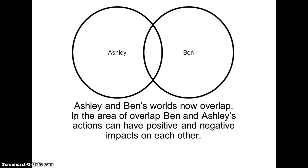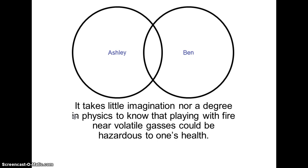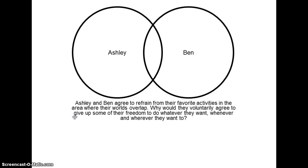Ashley's and Ben's worlds now overlap. In that area of overlap, Ben and Ashley's actions can have a positive and negative impact on each other. It takes little imagination nor a degree in physics to know that playing with fire near volatile gases could be hazardous to one's health. So what could Ben and Ashley do to prevent these negative impacts from occurring? Ashley and Ben agreed to refrain from their favorite activities — Ashley agrees to give up juggling flaming batons and Ben agrees not to play with hydrogen where their worlds overlap.